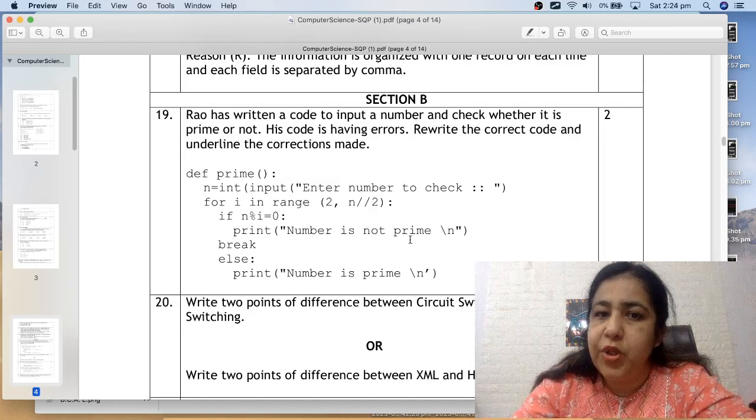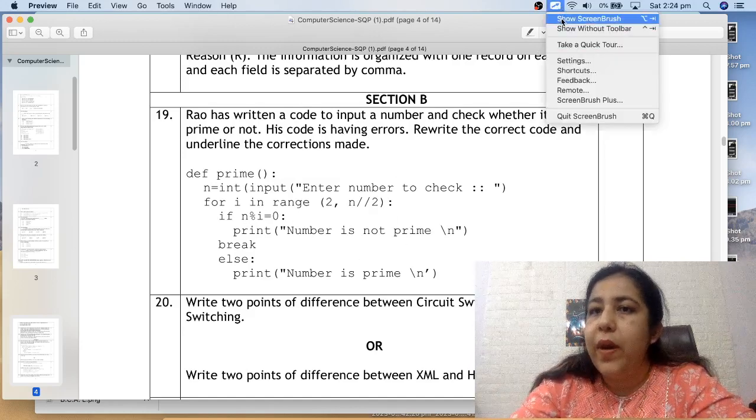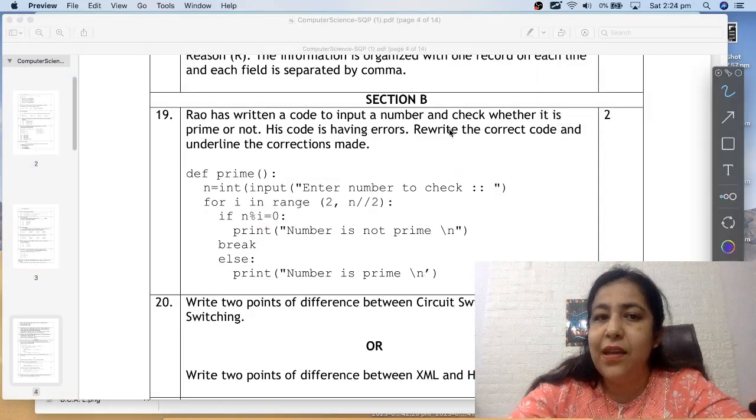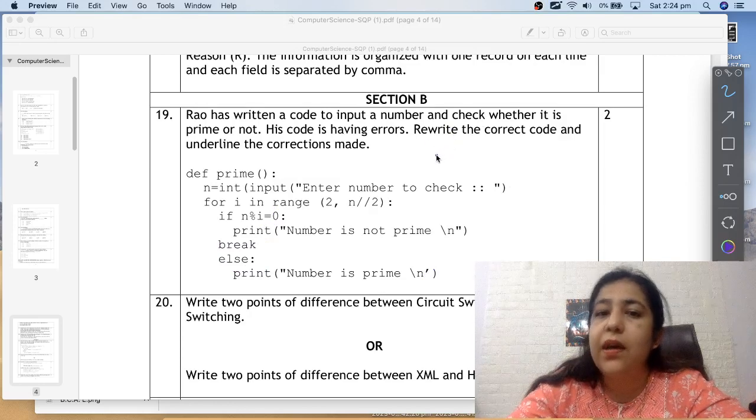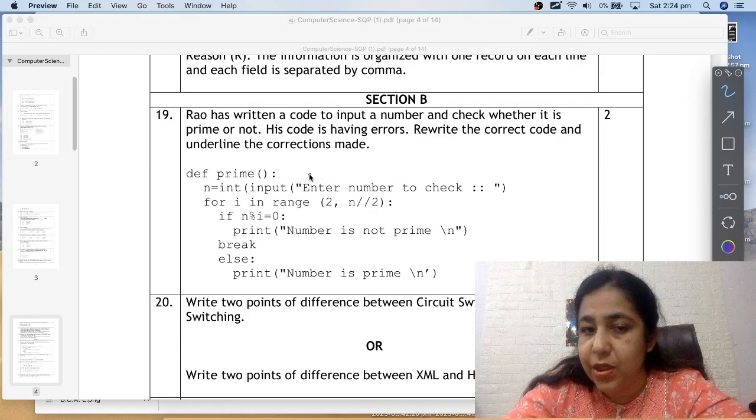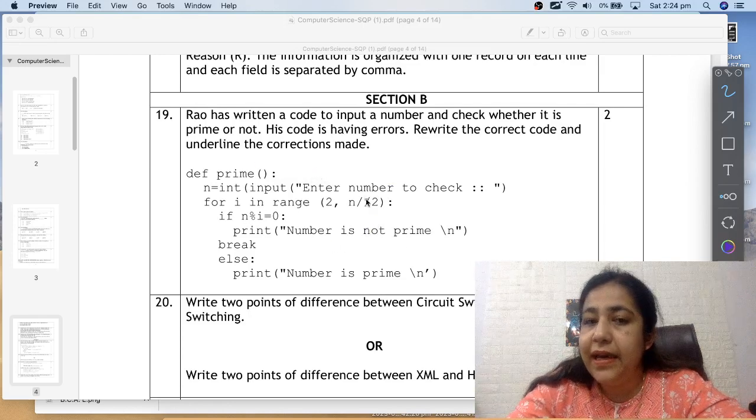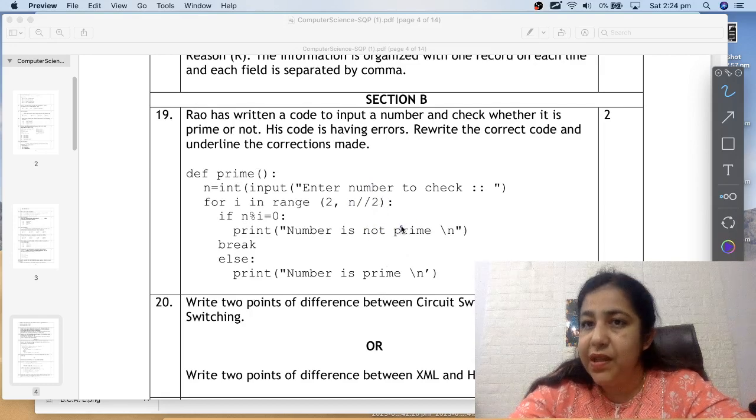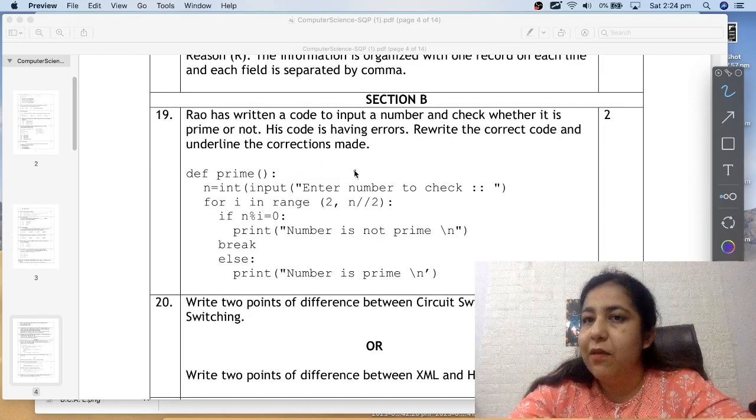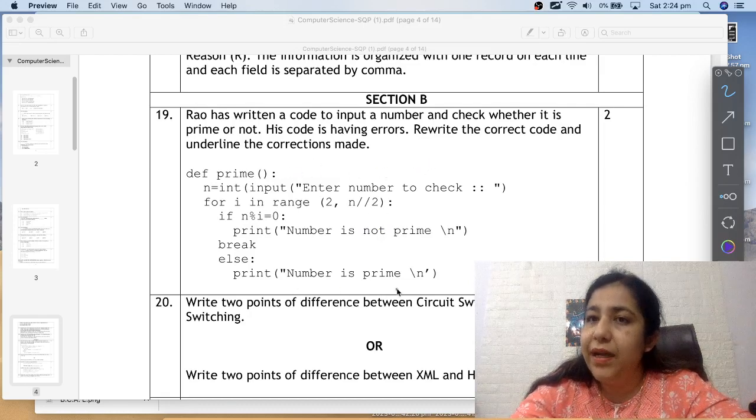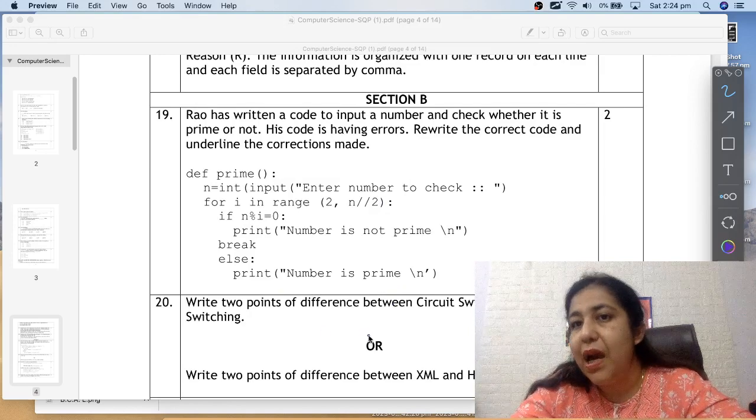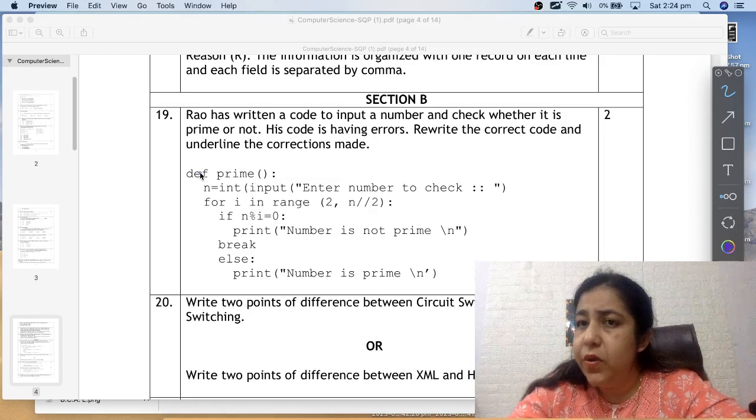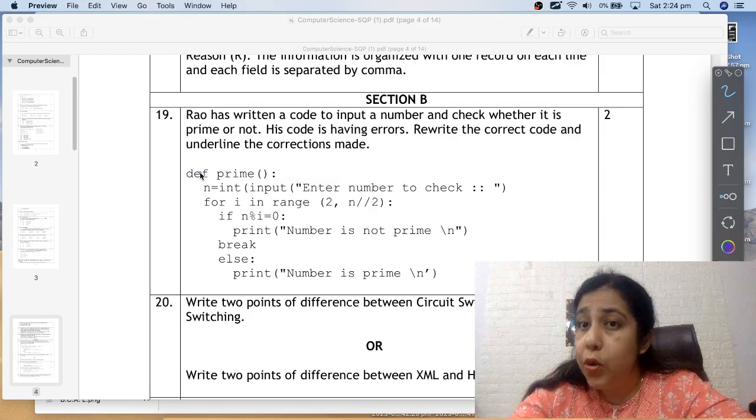Rao has written a code in which there are some errors. We need to tell what these errors are. You have to find syntax errors. Syntax error means the way we write the statements should be right. We don't want to search for logical or runtime errors. So what is the way to do this question? First, you will write this code in your answer sheet.